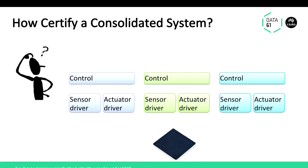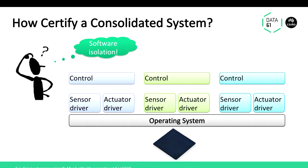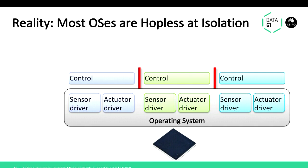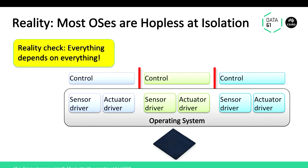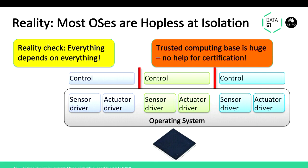So how do we certify the consolidated system? We use software isolation — a well-established concept. We have operating systems that provide address spaces to isolate things. But almost all operating systems are pretty hopeless at this because that's not what they do — for example, they put all device drivers in the kernel, including a very popular open-source operating system ending with X. You can't use this kind of system for safety-critical systems of any significant complexity because you have a huge trusted computing base. Everything can potentially affect everything, and you cannot make an isolation argument.